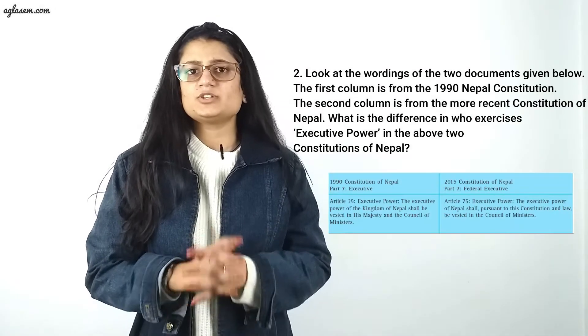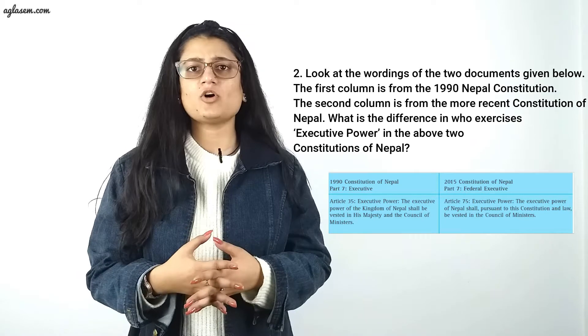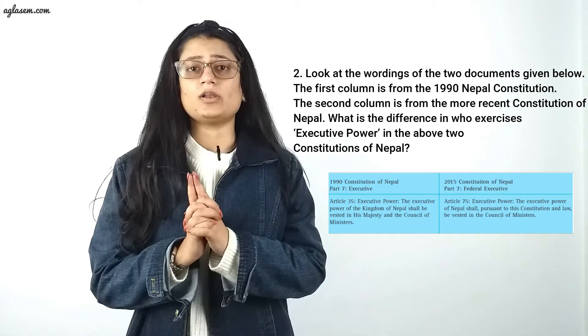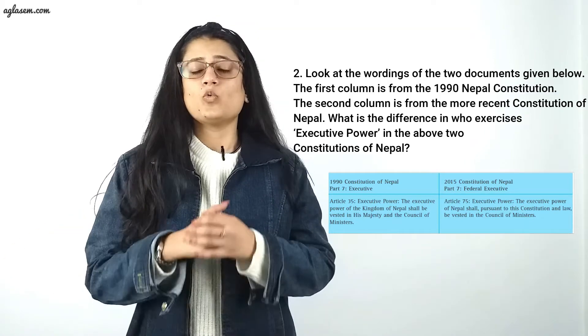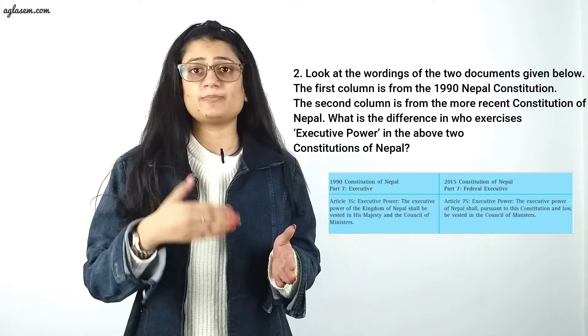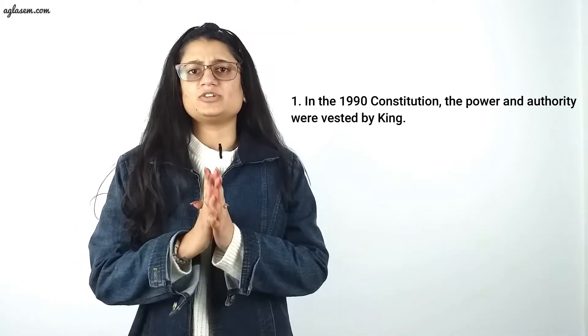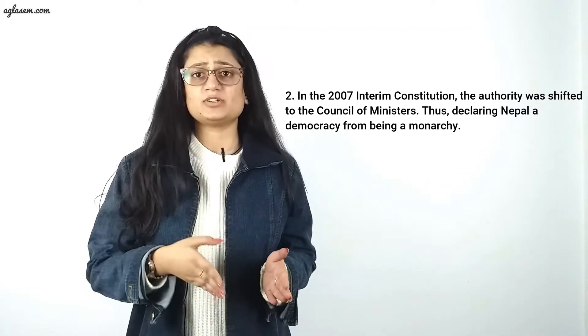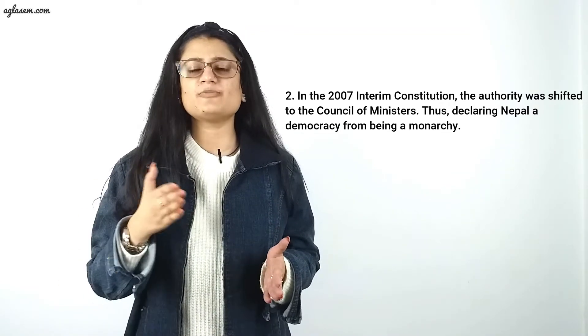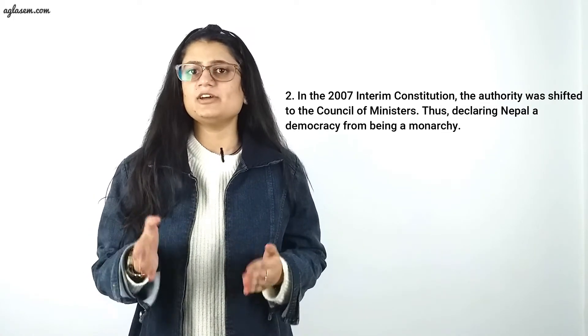Question number two: Look at the wordings of the two documents given — the first column is from the 1990 Nepal Constitution, and the second column is from the most recent constitution of Nepal. What is the difference in who exercises executive power in the two constitutions? In the 1990 constitution, power and authority were vested in the king. In the 2007 interim constitution, the authority was shifted to the Council of Ministers, thus declaring Nepal a democracy from being a monarchy.